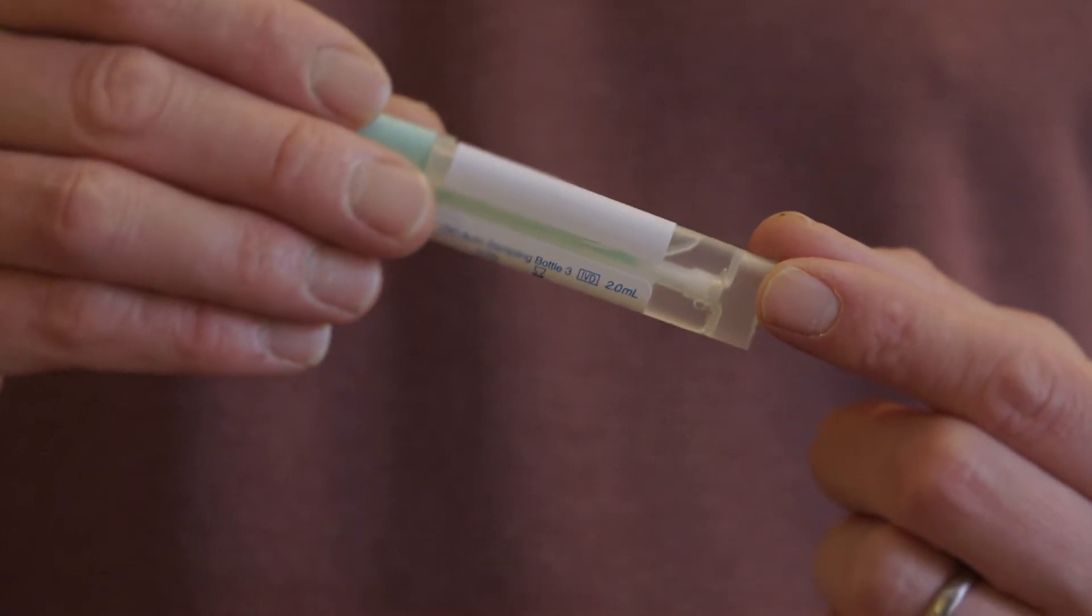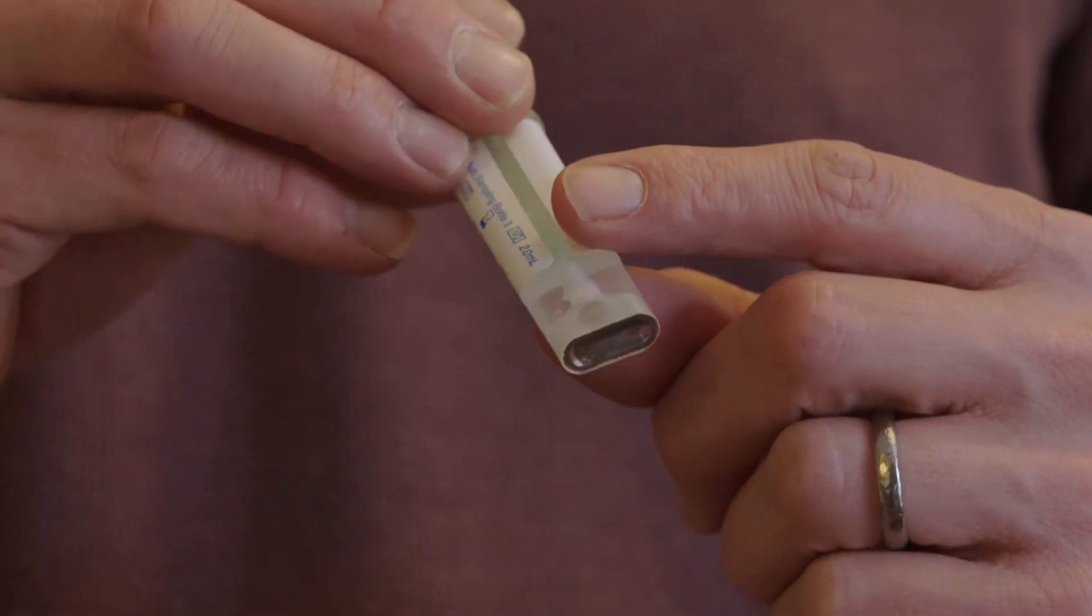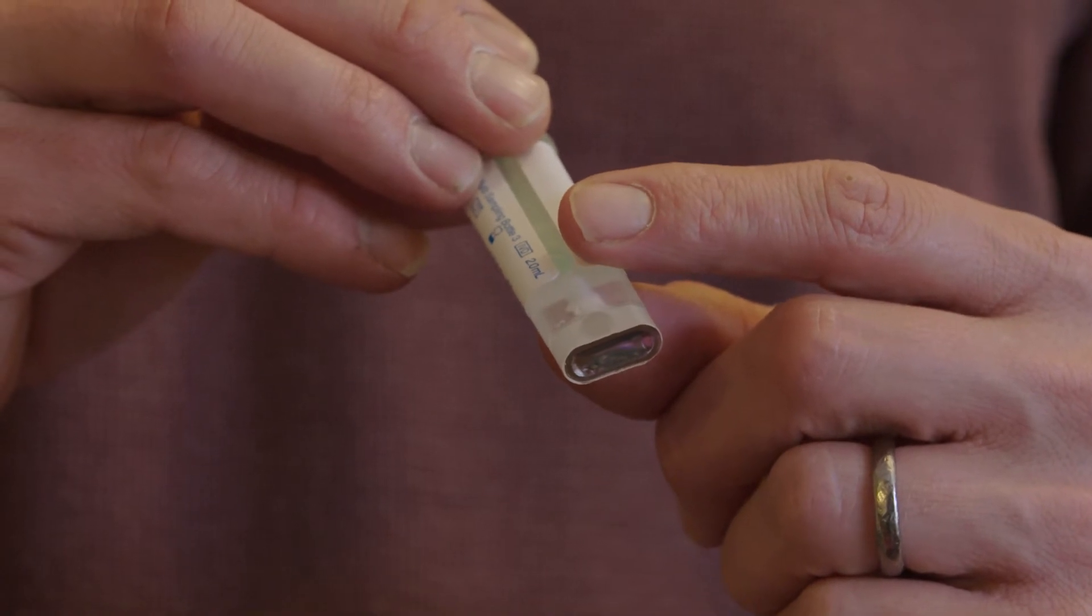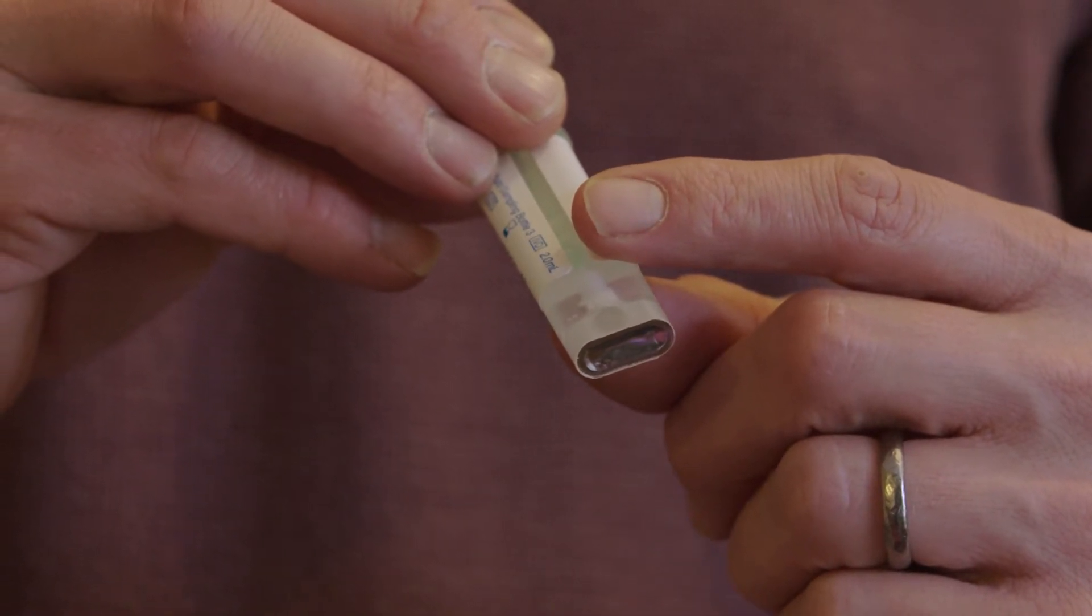The collection device contains some liquid. It's really important that that liquid stays in the device because it stabilises the sample. So the patients mustn't break the seal on the end or try and squeeze the liquid out of the device.